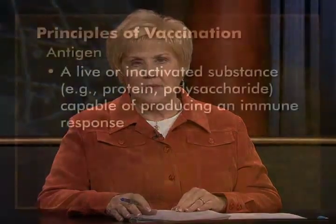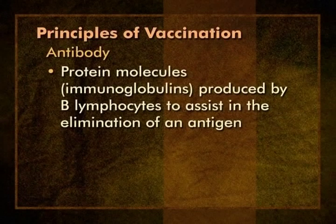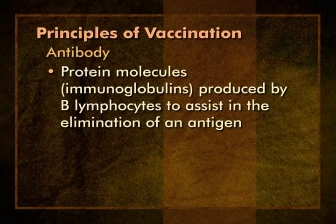What was illustrated in that animation is generically known as an immune response. There are two central elements in this immune response to infection: antigen and antibody. Antigen is a live or inactivated substance, such as a protein or polysaccharide, which is capable of producing an immune response. Antibodies are the muscle of the immune response—protein molecules known as immunoglobulins produced by B lymphocytes in response to the antigen. Antibodies assist other components of the immune system in the elimination of an antigen. Antibodies are very specific and only recognize the antigen which produced them, or very closely related antigens.